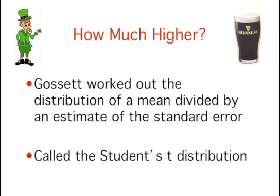While working for the Guinness Brewery in Ireland, he managed to work out the distribution of a mean divided by an estimate of its standard error, saving us a lot of headaches. This distribution is called the Student's t-distribution, or sometimes just the t-distribution. Why not the Gossett distribution? Well, it seemed that his contract with the brewery prevented him from publishing under his own name, so he chose the pseudonym "student".